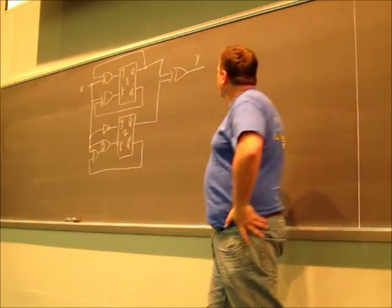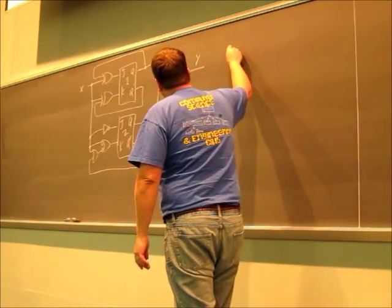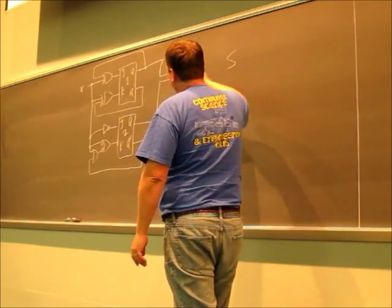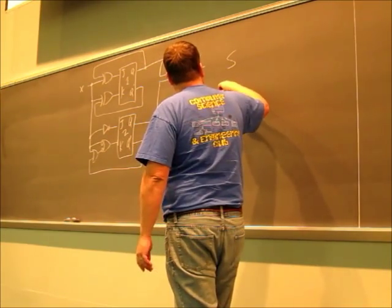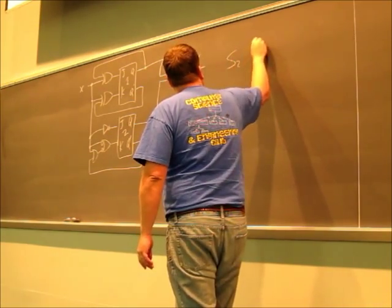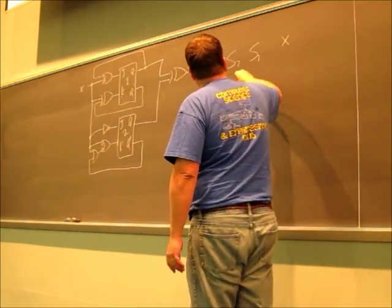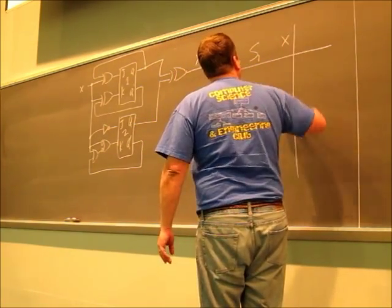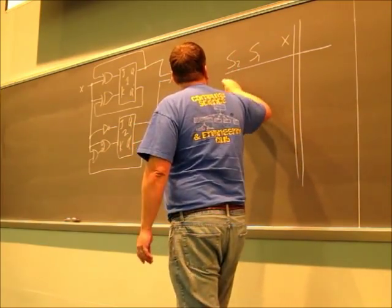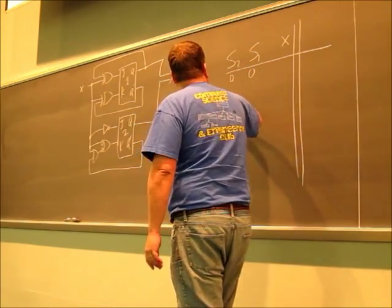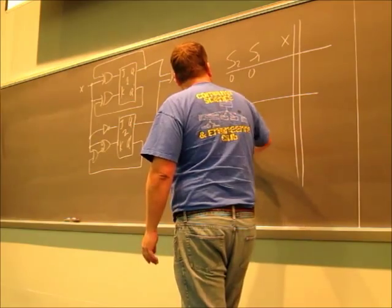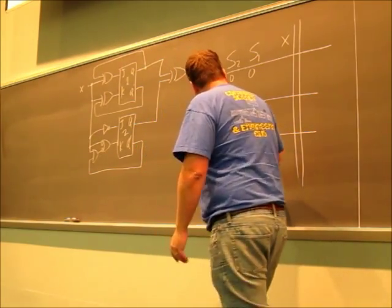So when I'm making my table up, I've got, I'm going to just label it as S, appropriately 2 and 1. So state 2, state 1, and then I've got an input X. So I've got state 00, state 01, state 10, state 11.